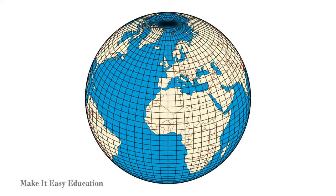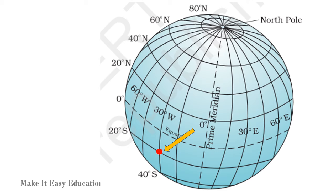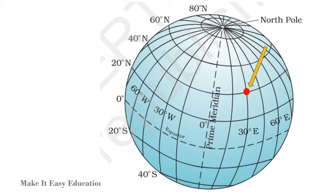Now, let us find the coordinates of this point on the earth. For this, we have to see which lines of latitude and longitude meet at this point. The point is at 20 degrees south and 30 degrees west. Find the coordinates of this point on the earth. The point is at 40 degrees north and 30 degrees east.